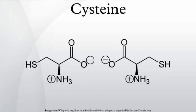Cysteine is required by sheep to produce wool; it is an essential amino acid that must be taken in from their feed. As a consequence, during drought conditions sheep produce less wool. However, transgenic sheep that can make their own cysteine have been developed.